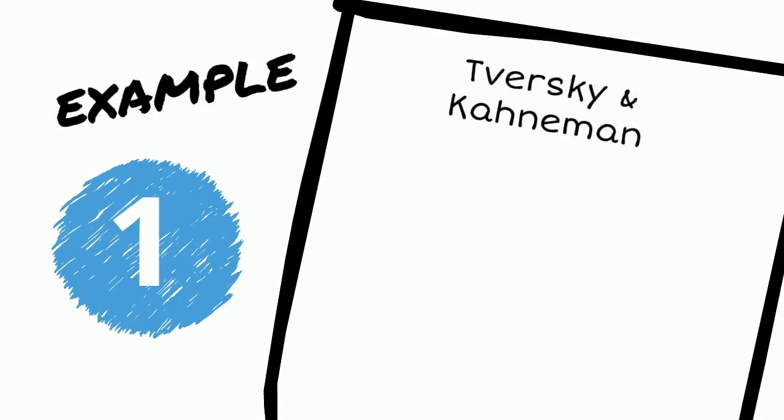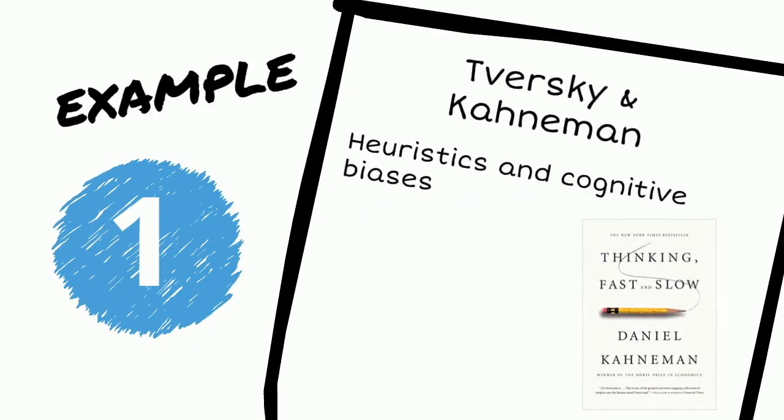My first example is Tversky and Kahneman's pioneering research on cognitive biases and heuristics. In Kahneman's best-selling book, Thinking Fast and Slow, which you probably have heard of, Kahneman summarizes several decades of research and explains the difference between System 1 thinking and System 2 thinking.